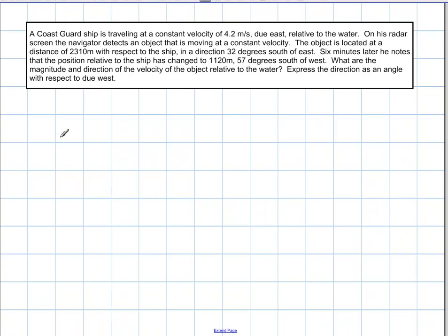Welcome back. Right now we're going to take a look at a relative velocity problem that is a little bit more difficult than the last one we went over. This is going to be dealing with the relative velocity of ships traveling in the ocean, and we're going to be asked to find the relative velocity of an object with respect to the water.